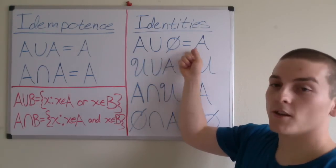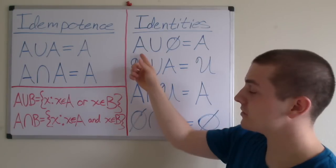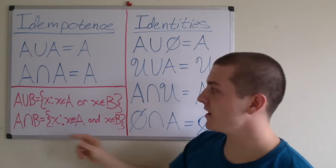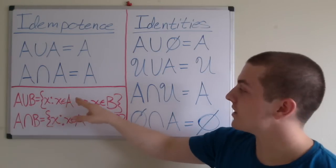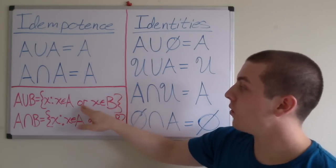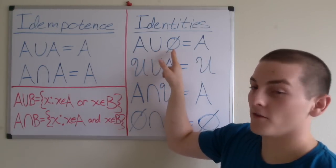So A union null set equals A. And by definition, that means A union null set equals the set containing elements x such that x is an element of A or x is an element of the null set.